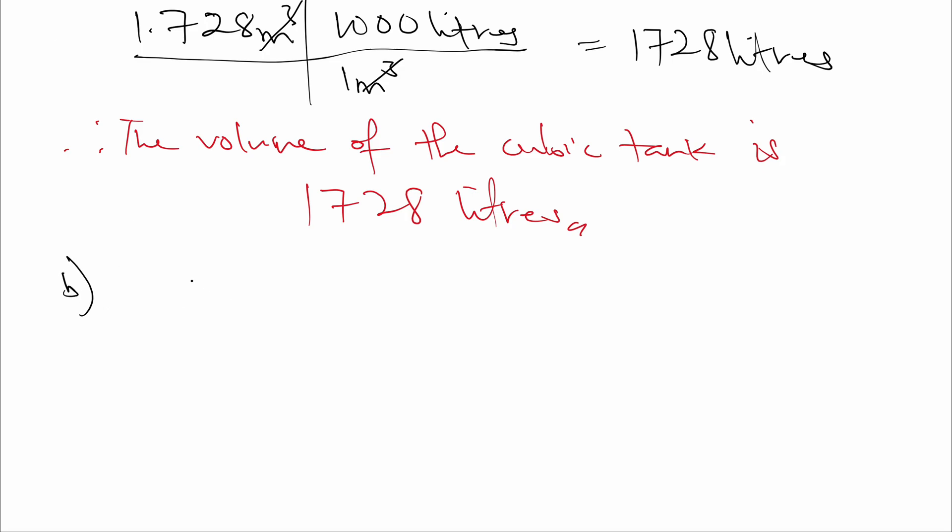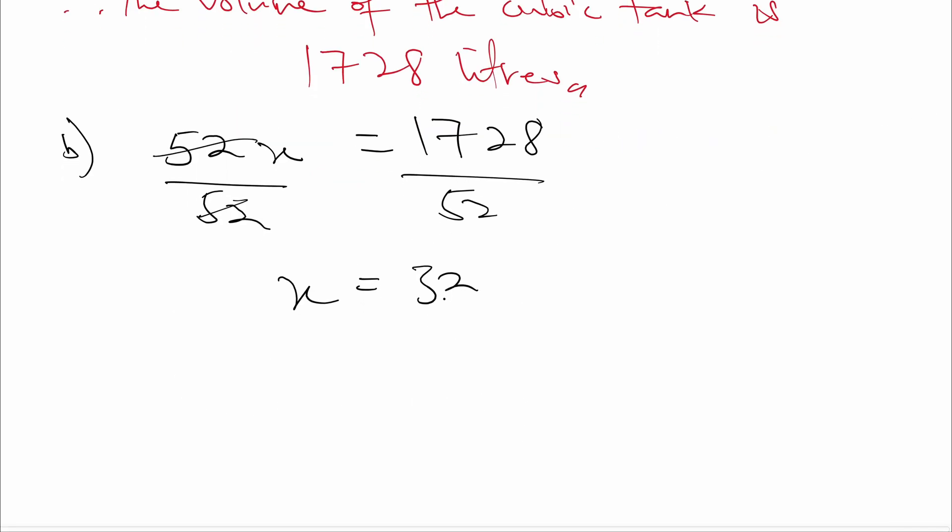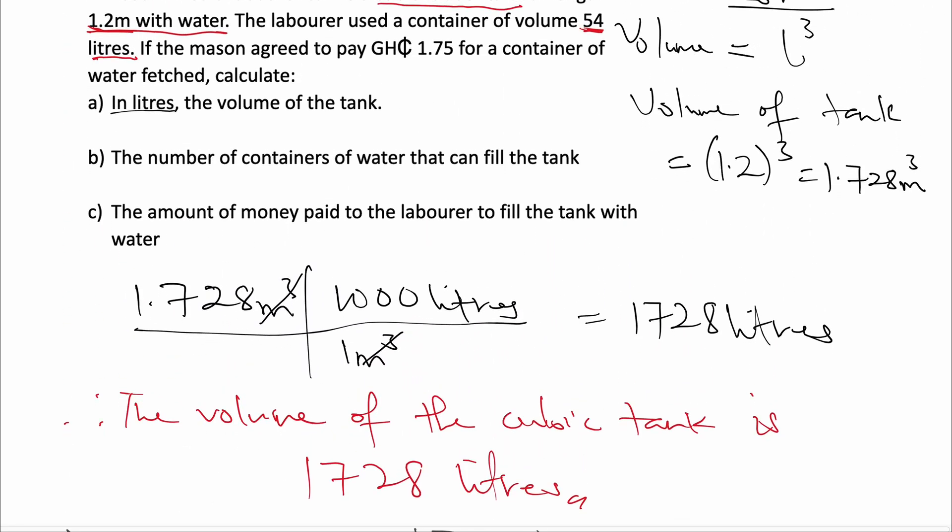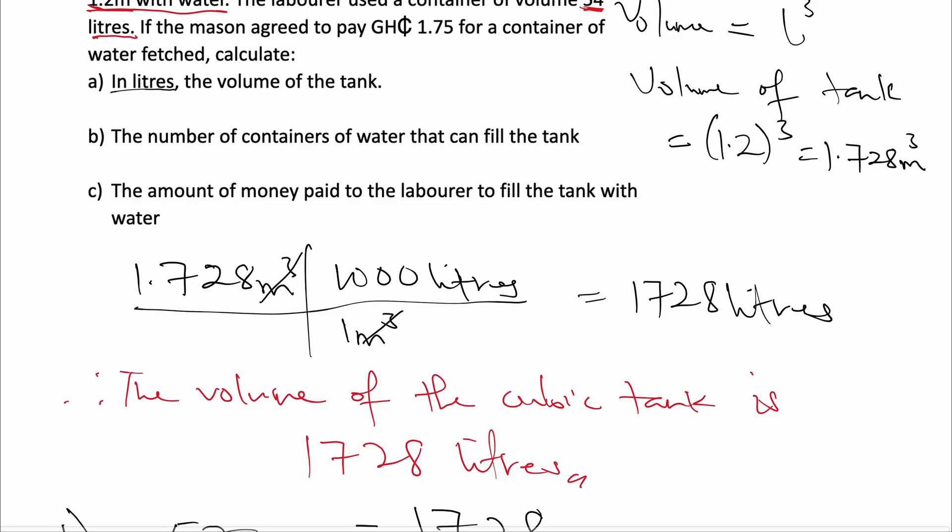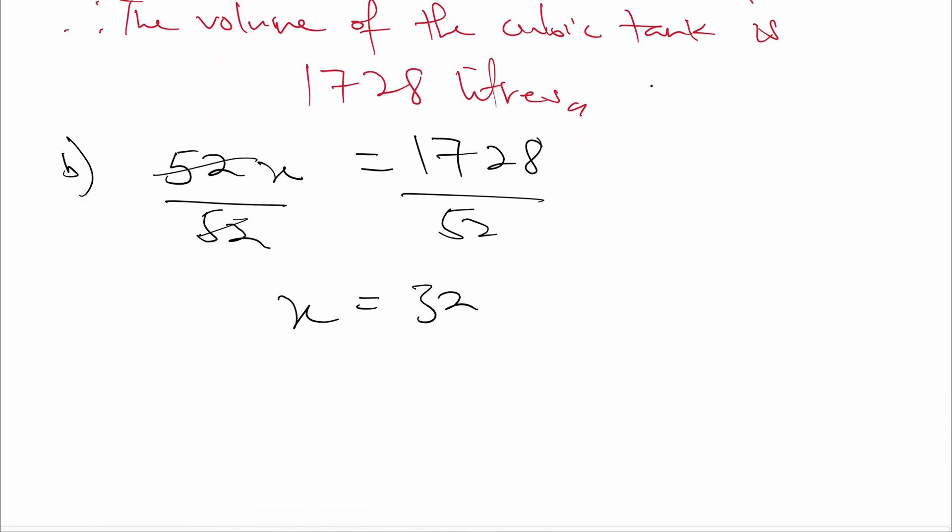So for B, 54 times what will be equal to 1,728? So to find x, we divide both sides by 54. This cancels this. X will be equal to 1,728 divided by 54, and that will be 32. So what this means is that 32 containers, which are 54 liters in volume, will be able to fill the cubic rubber tank. So the number of containers that can fill the tank is 32.